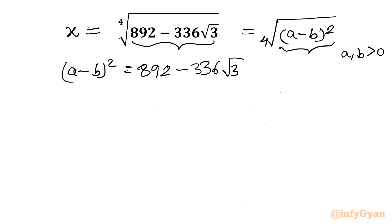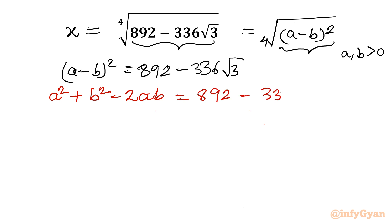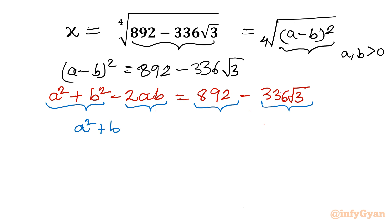Let us expand the LHS using the algebraic identity a minus b whole square, which is a squared plus b squared minus 2ab. So a squared plus b squared minus 2ab equals 892 minus 336 root 3. Comparing both sides: a squared plus b squared equals 892, and 2ab equals 336 root 3.